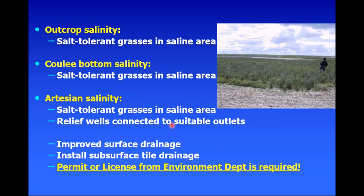For artesian salinity, sometimes if you have flowing wells you can connect them to a suitable outlet to get them flowing into a surface drain. But before playing around with improving surface drainage or considering installing tile subsurface drainage, it's important to recognize that you typically have to go to your environment department and get a development permit or license for your project. You have to make sure you get permission if you're going to start moving water off your land through surface or tile drainage.